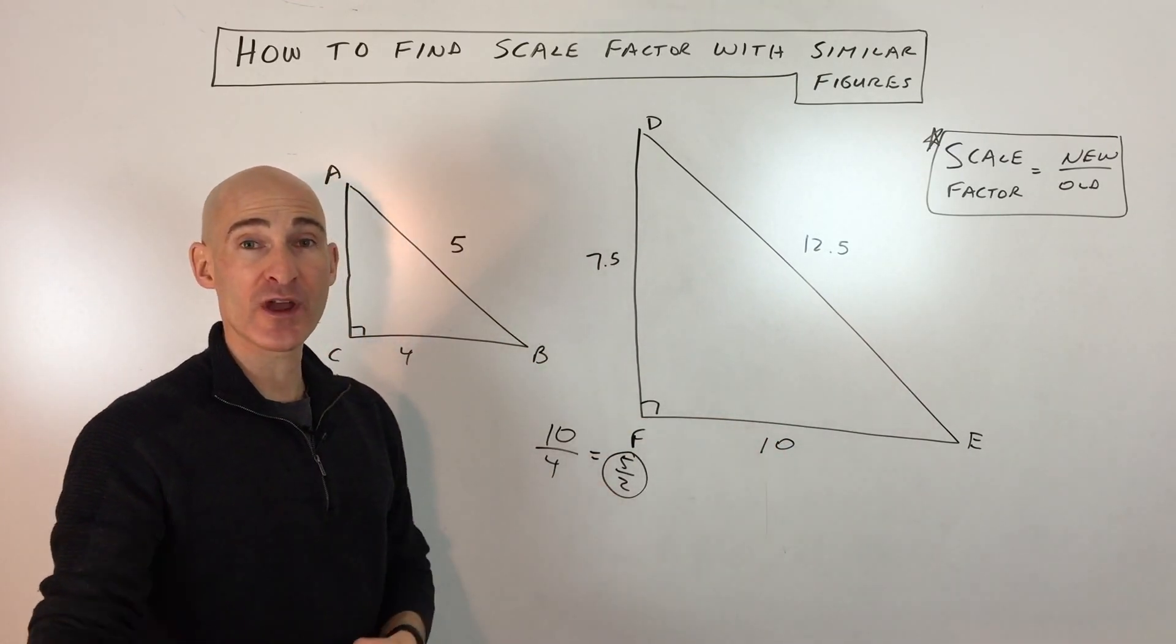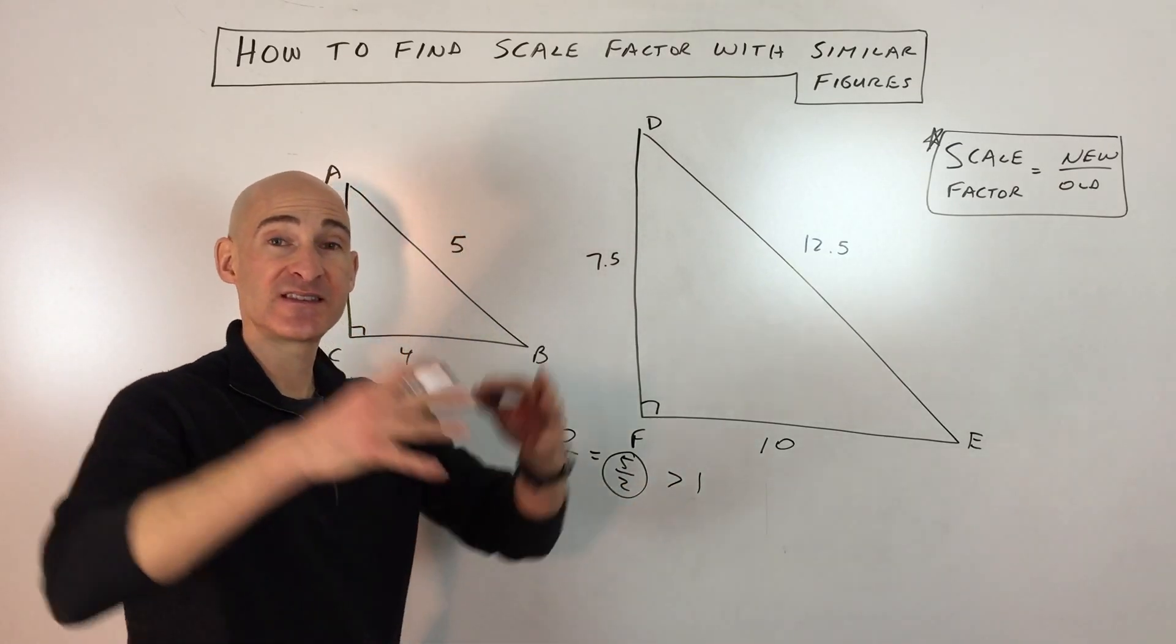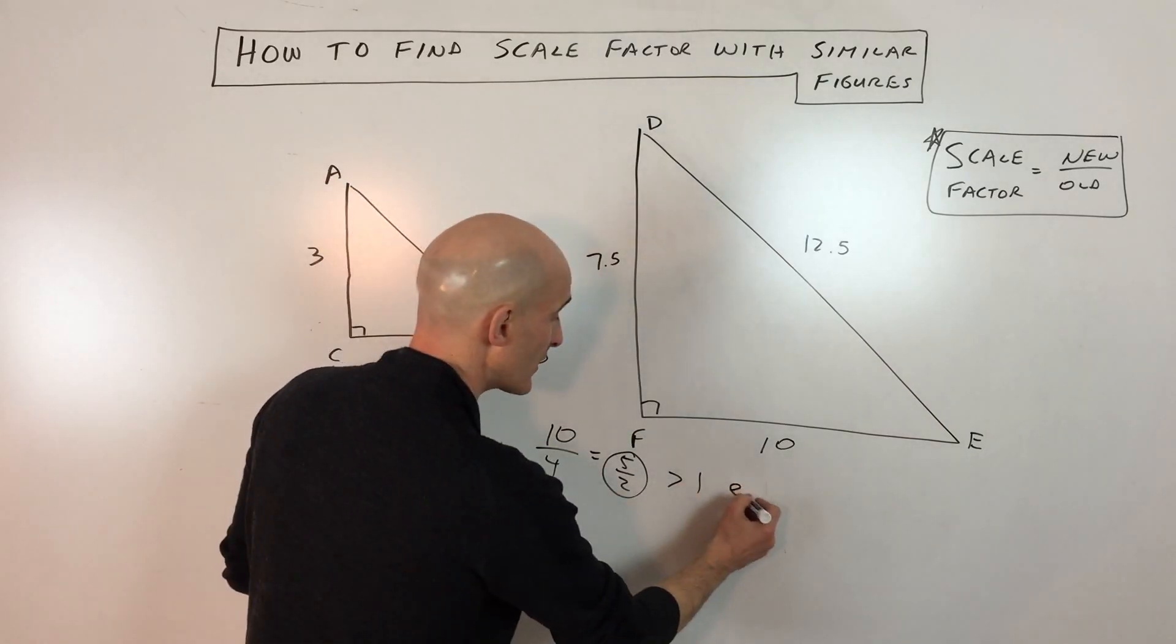Now, one way that you can tell you're on the right track is if the scale factor is greater than 1, then that means it's an enlargement. It's getting bigger.